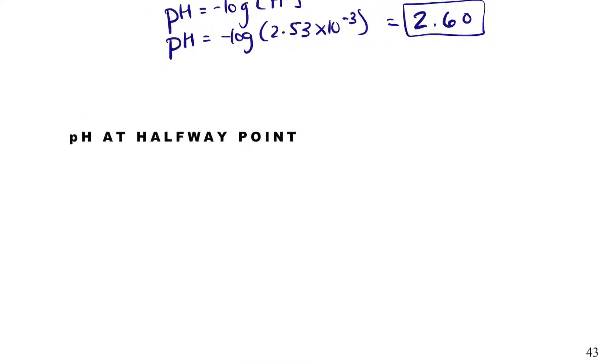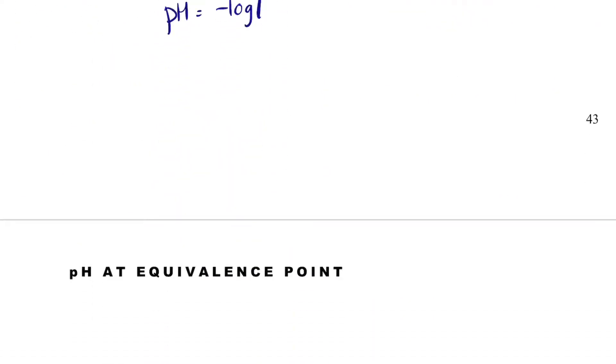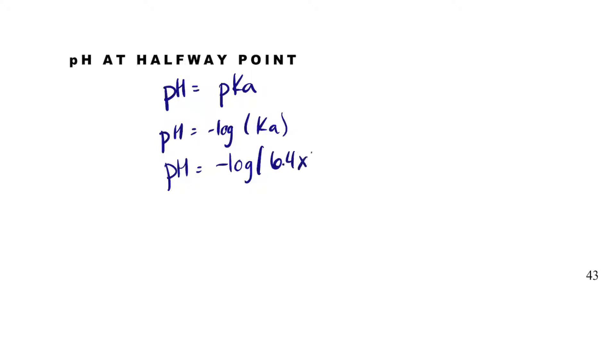Now, in B it says the pH at the halfway point. Well, if I remember from a titration that the pH at the halfway point is equal to the pKa, and that's because the concentration of conjugate base and of acid still remaining are equal. And so the pH equals just the negative log of the KA. So pH equals minus log of, what was the KA, 6.4 times 10 to the minus 5. And so the pH should be higher because I've added some sodium hydroxide, and it is, it is 4.19, no units on pH.